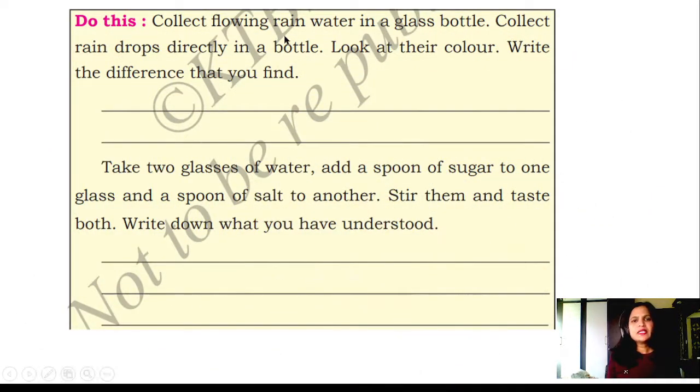Do this: Collect the flowing rain water in a glass bottle. Collect the rain drop directly in the bottle. Look at their color. Write the difference that you find. If you collect rain water directly in the bottle or glass, then if you look at the color, it will be colorless water.